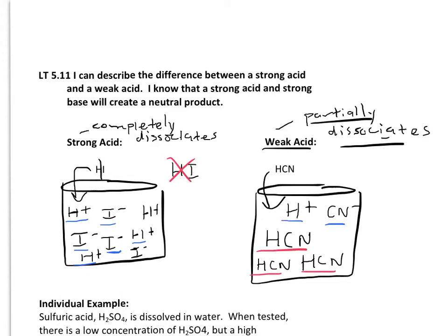So that's the main difference between a strong acid and a weak acid. Again, that a strong acid completely dissociates and a weak acid only partially dissociates, which means breaks apart.